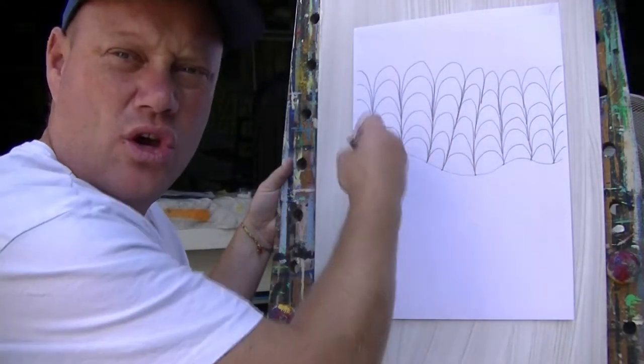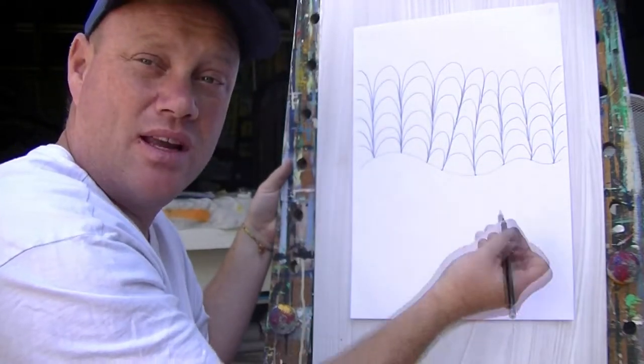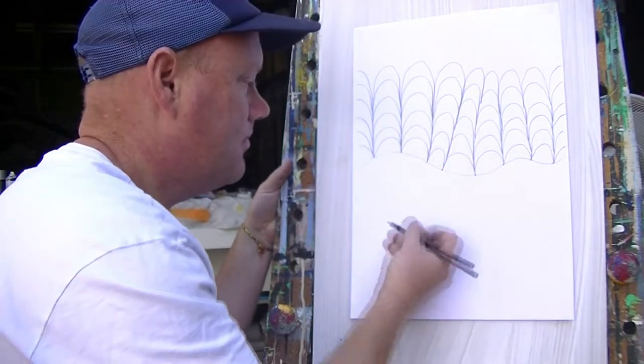Now that you've done all your curving lines, we now need to do the same on the reverse, on the bottom side, exactly the same, like a mirror image, like this.